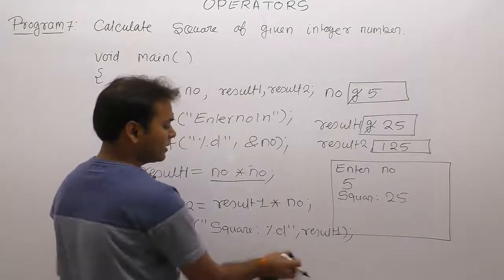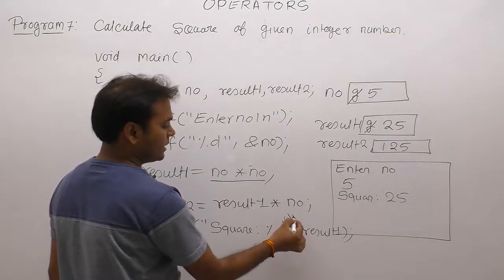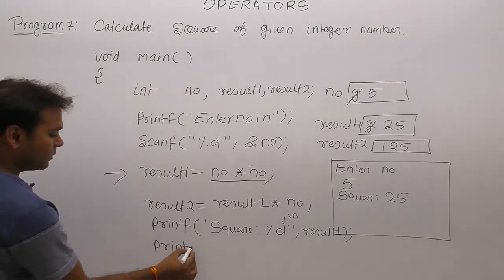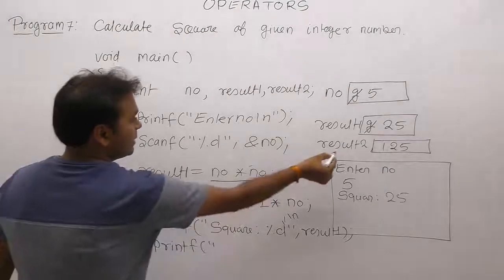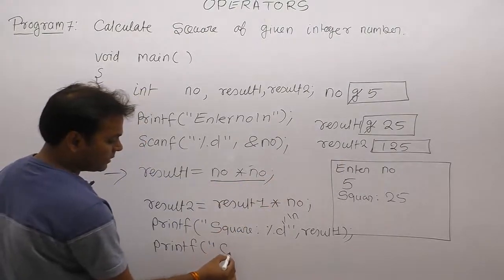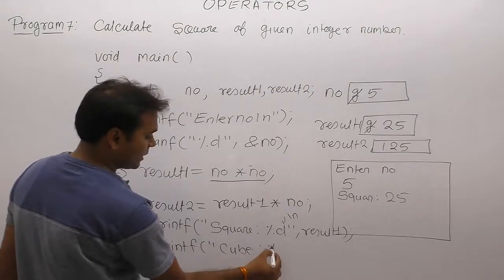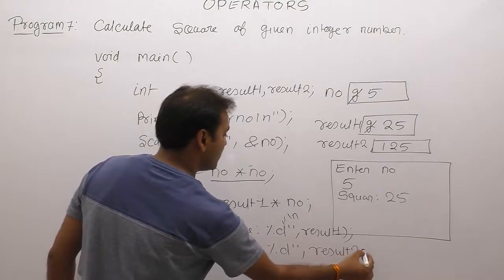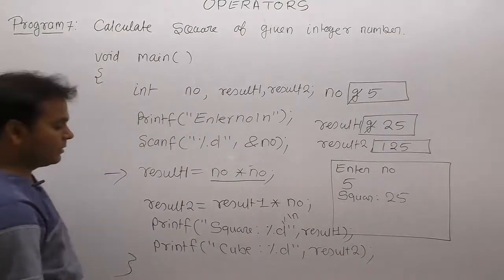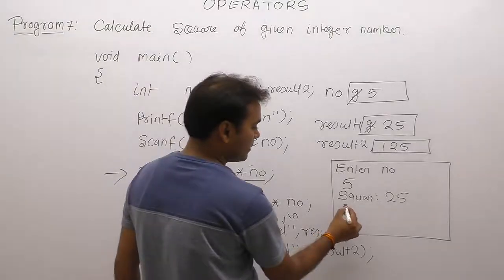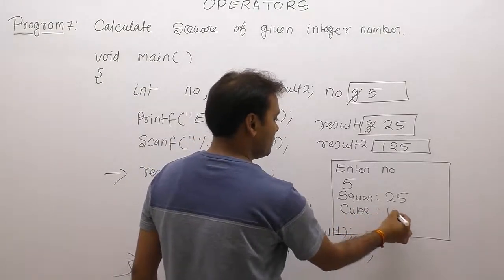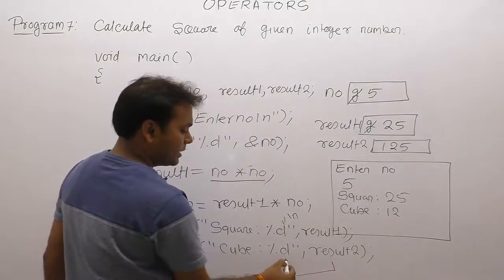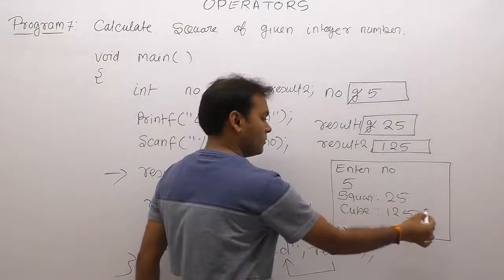Then slash n, changing the line. Next line, again result of cube inside result2, then displaying cube. Again percent d, value of result2, then close it. Then next printf displays space, cube. Value of result2 is 125. In that place, percent d is replaced by 125. Clear.